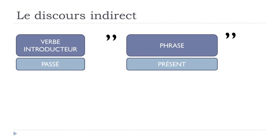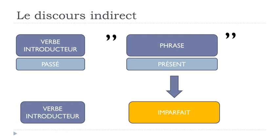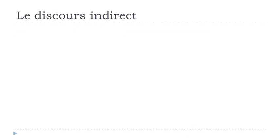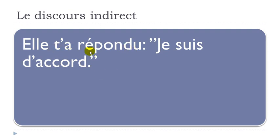For all examples I'll put the verb introducteur at the passé composé. If we get the second part at the present form, it will have to change. First example: elle t'a répondu, je suis d'accord. We've got passé composé in the first part and present in the second part. The rule: the first part doesn't change, it stays at passé composé. But the present form in the second part must change — the verb être must be put at the imparfait.